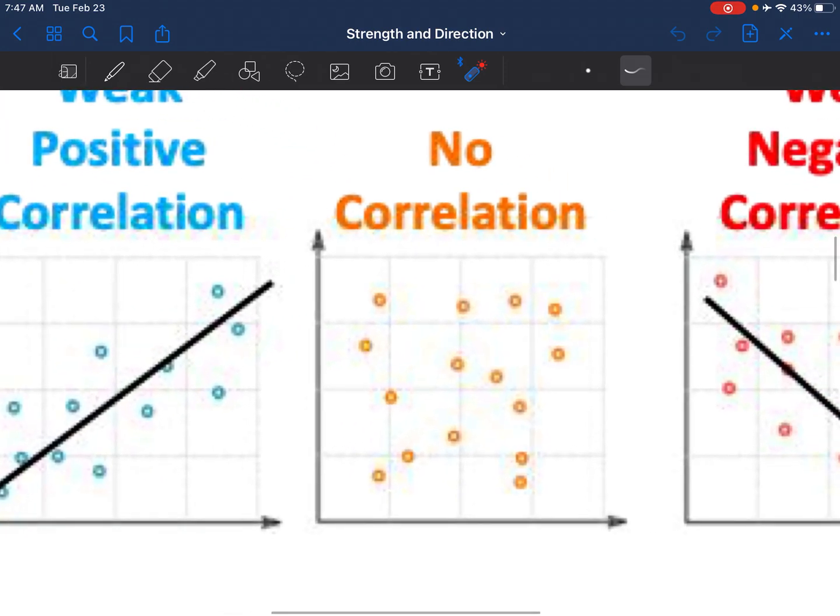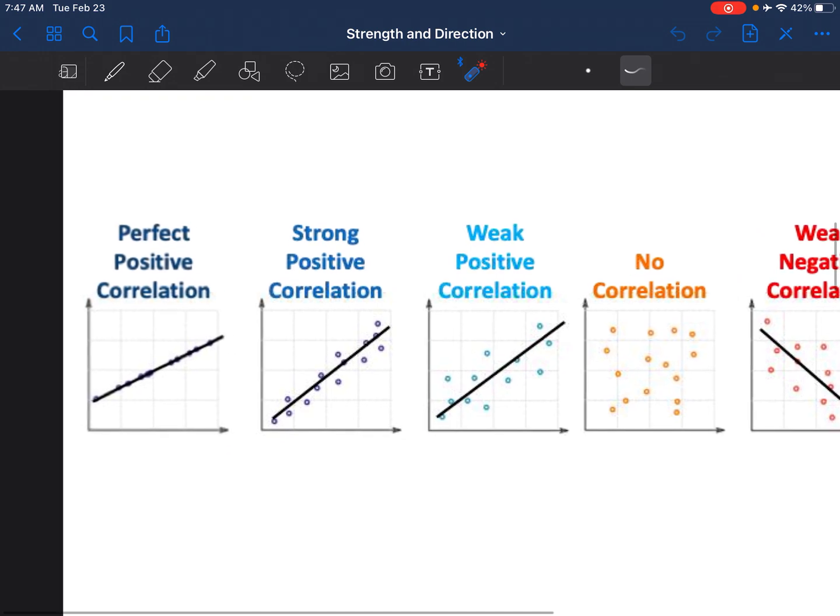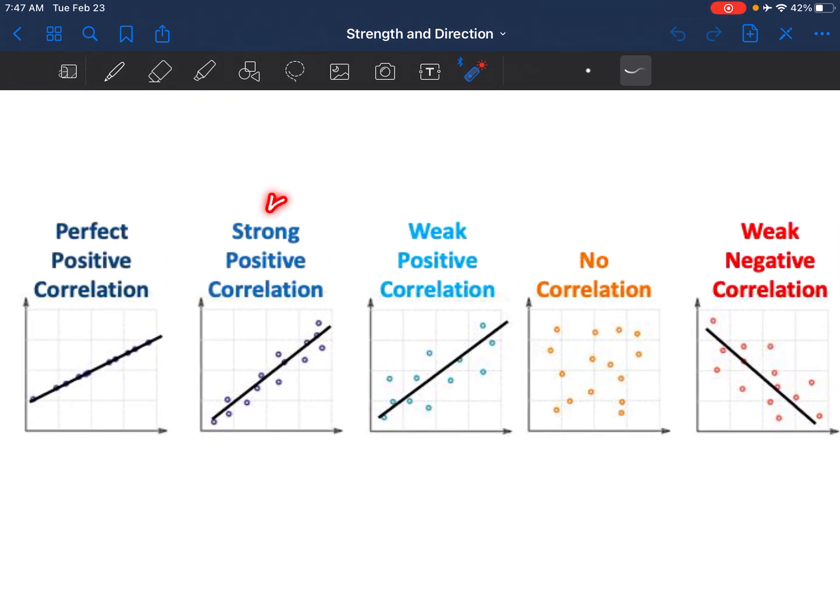And this one is no correlation. I can't really draw a line here to see where my points would be. If I did and did something like this, there are so many points above, so many points below that this line doesn't really help us determine where a point might be. So you can see the difference between strong and weak, they're just getting more spread out.